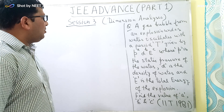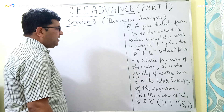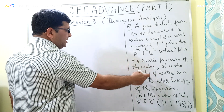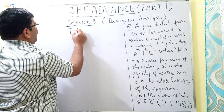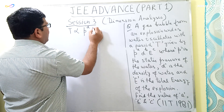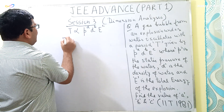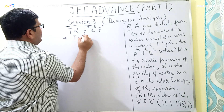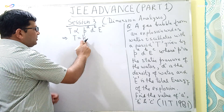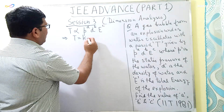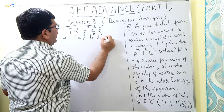A gas bubble from an explosion under water oscillates with a period T given by P to the power A, D to the power B, E to the power C, where P is the static pressure of the water, D is the density of water, and E is the total energy of the explosion. So T is directly proportional to P^A · D^B · E^C, which can be written as T = K · P^A · D^B · E^C, where K is a dimensionless constant.